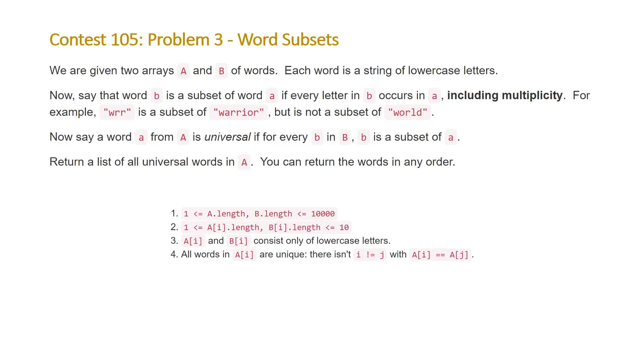Now, say a word A from A is universal if for every B in B, B is a subset of A. Return a list of all universal words in A. You can return the words in any order. And the constraints for this problem, the length of our arrays A and B are going to be up to 10,000. The length of each of our words in those arrays is going to be no more than 10 characters. The characters will be lowercase and all the words are unique.